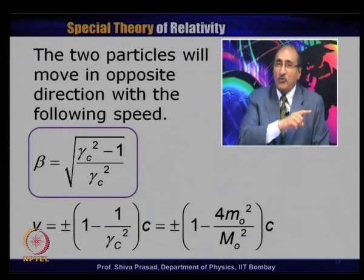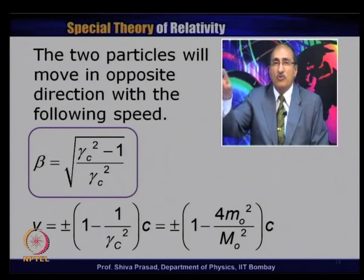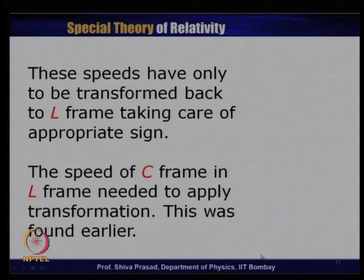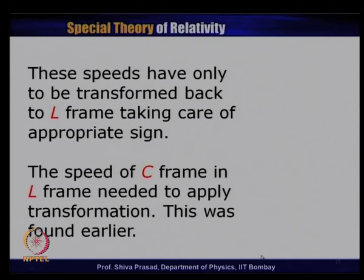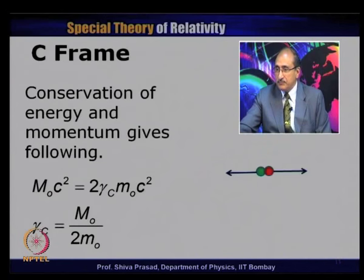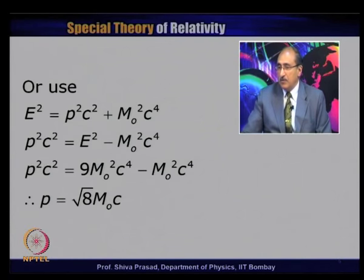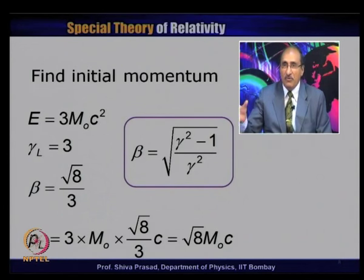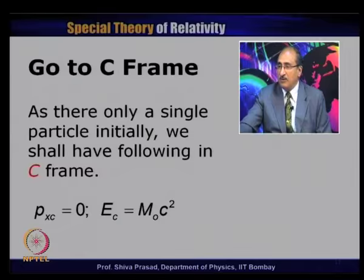Let us first find the total initial energy of the electrons in the L frame. The electron at rest contributes 0.51 MeV and the incident electron contributes 1.4 MeV, giving a total of 1.91 MeV. The second particle at rest has zero momentum. For the incident electron, using E² = p²c² + m₀²c⁴: p²c² = (1.4)² − (0.51)² MeV², giving p ≈ 1.304 MeV/c.